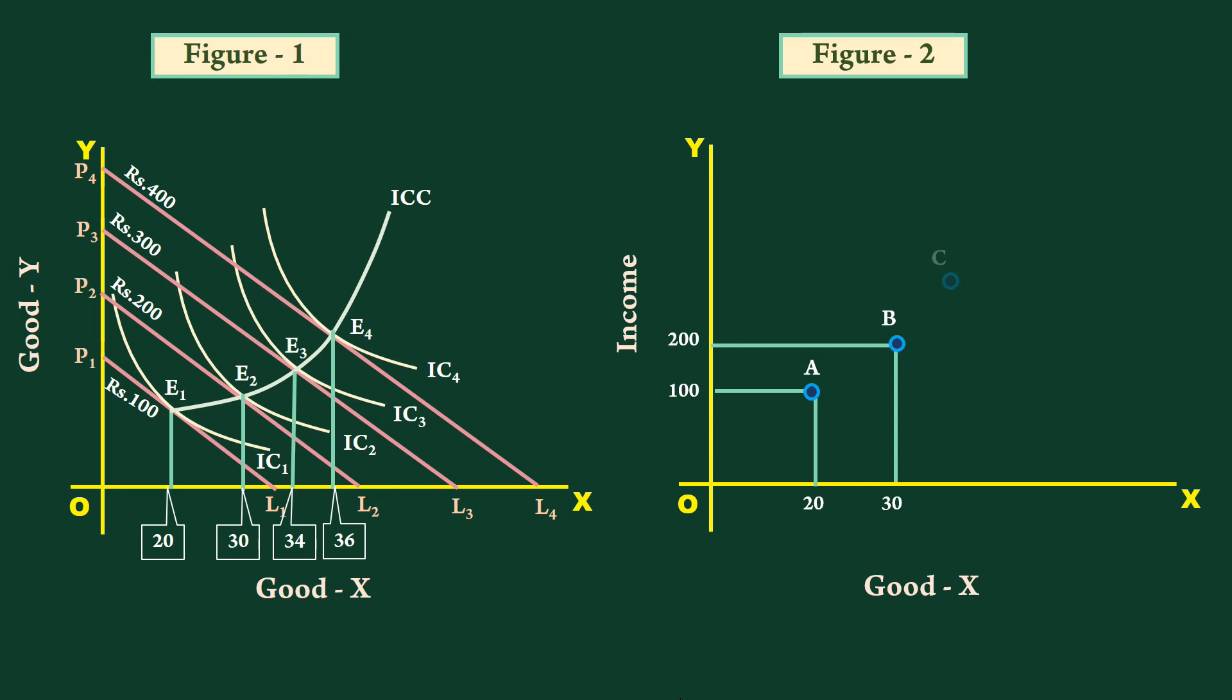Similarly point C represents 300 rupees income and 34 units, and D depicts 400 rupees income and 36 units.